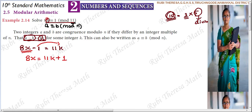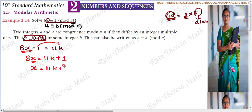We will keep 8x on one side. Minus 1 can be shifted to the other side, so after 11k it becomes plus 1 when shifted. We have to solve for x — for which value of x this value will leave a remainder of 1 when divided by 11. Rearranging: x equals 11k plus 1, divided by 8.